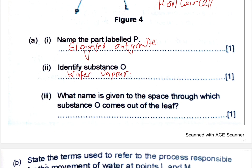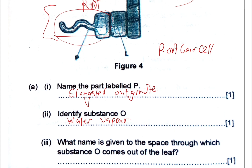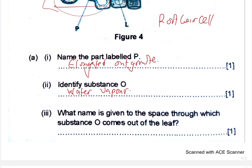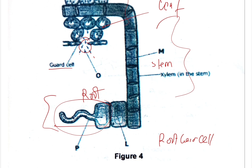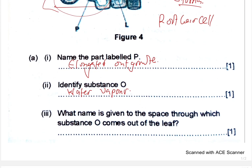Question number three: what name is given to the space through which substance O comes out? This space — and we only have one space here — is called a stoma. The singular is stoma. If we are considering just a single opening, then we write stoma. But even if you write stomata, they will likely mark it. You should be able to differentiate singular and plural.